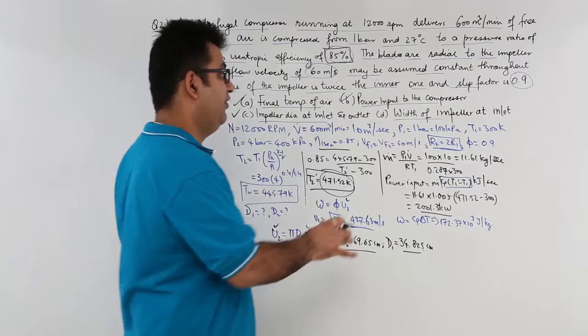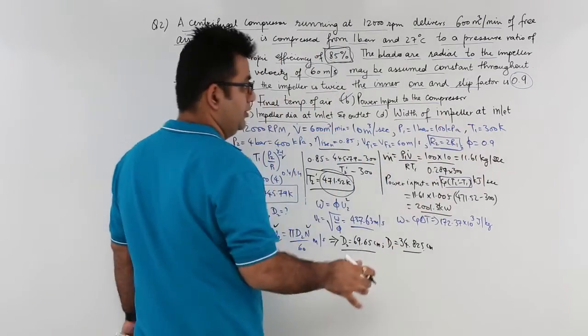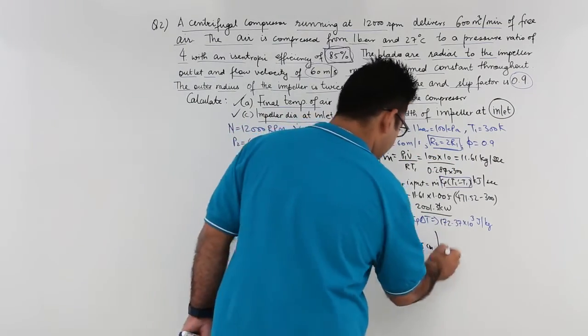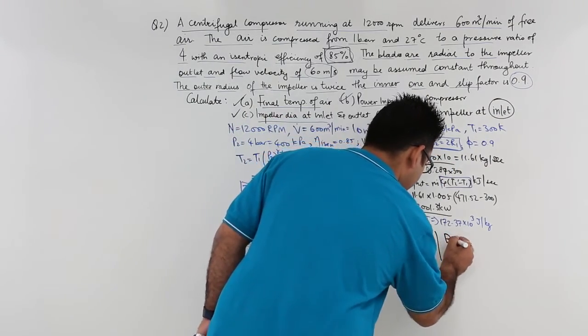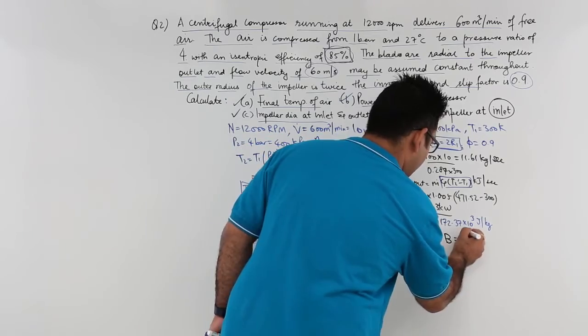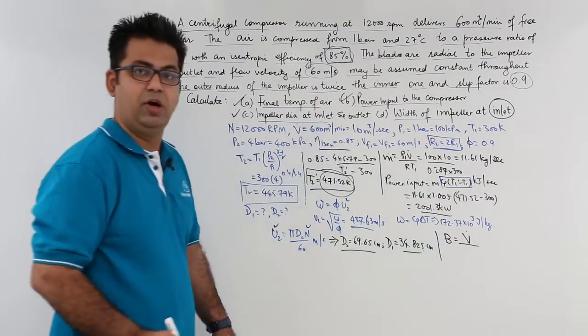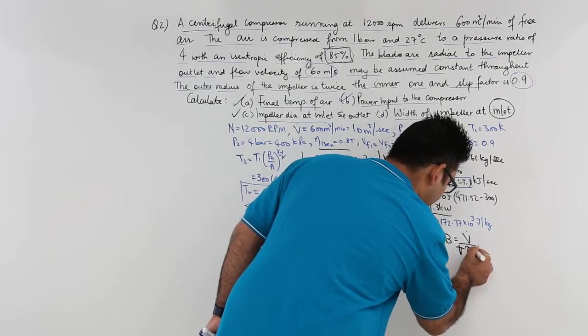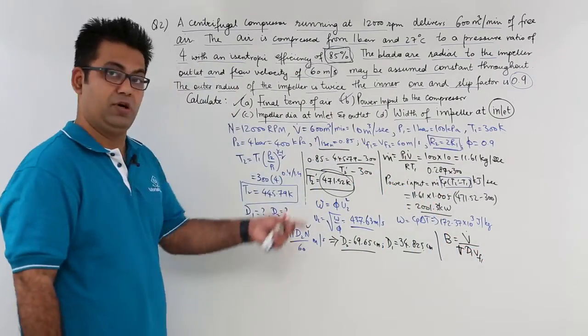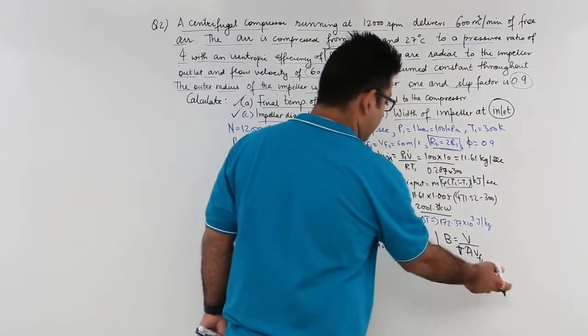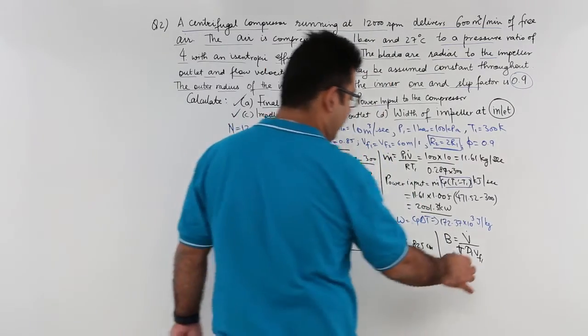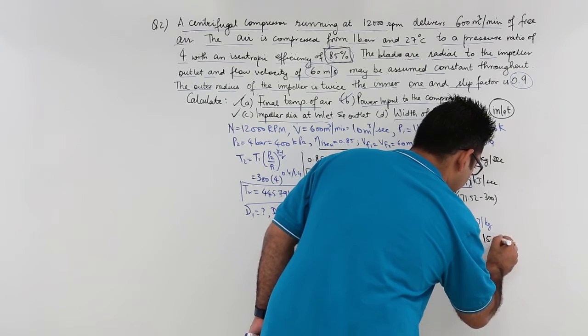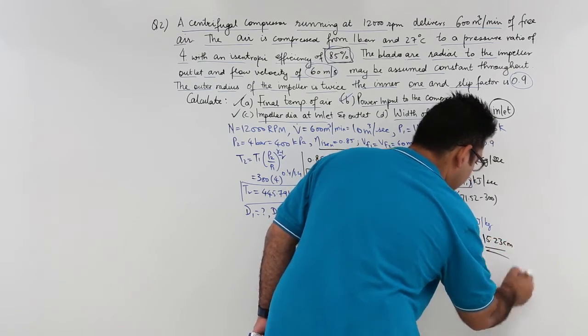Last part which is the width of impeller at inlet. So you have a specific formula for this. Remember that which is b is equal to volume flow rate v dot upon pi into d1 into vf1. Because we need an inlet so the subscript is 1. So this would give you the value of width as 15.23 centimeters. So this finishes the last part of the question.